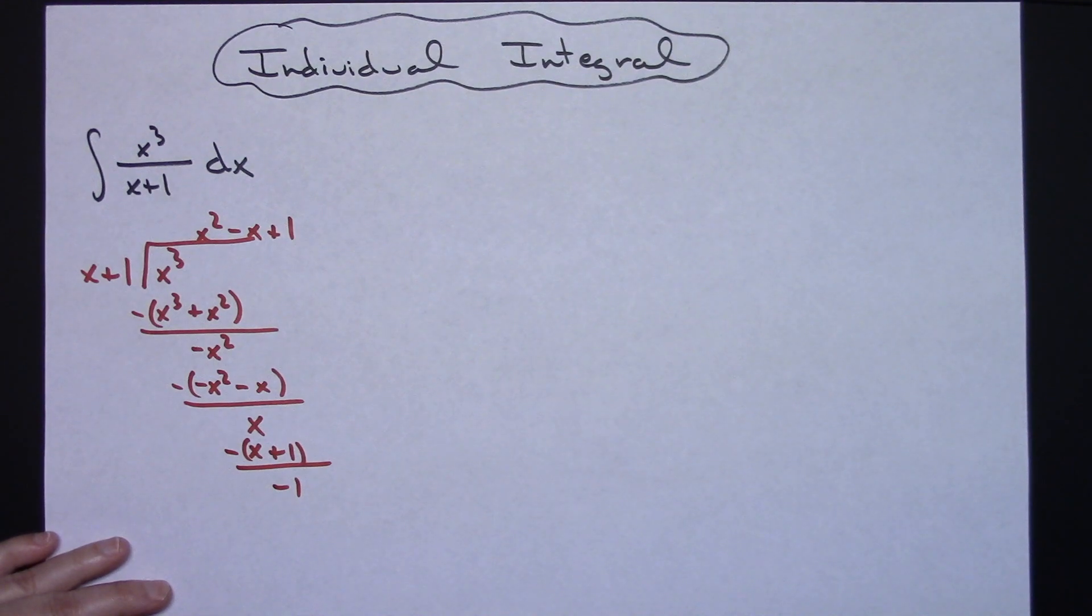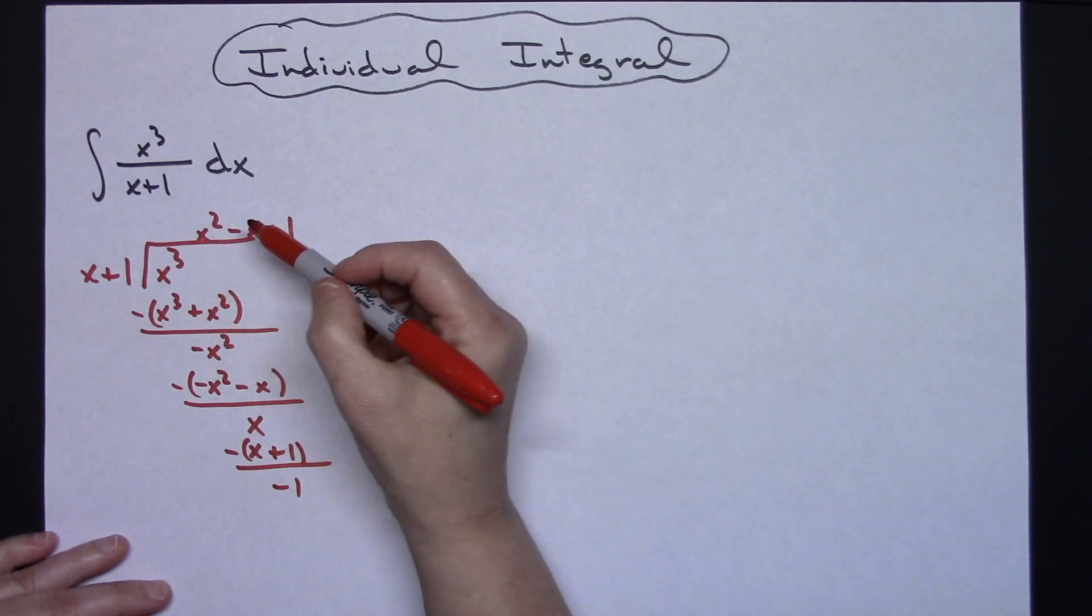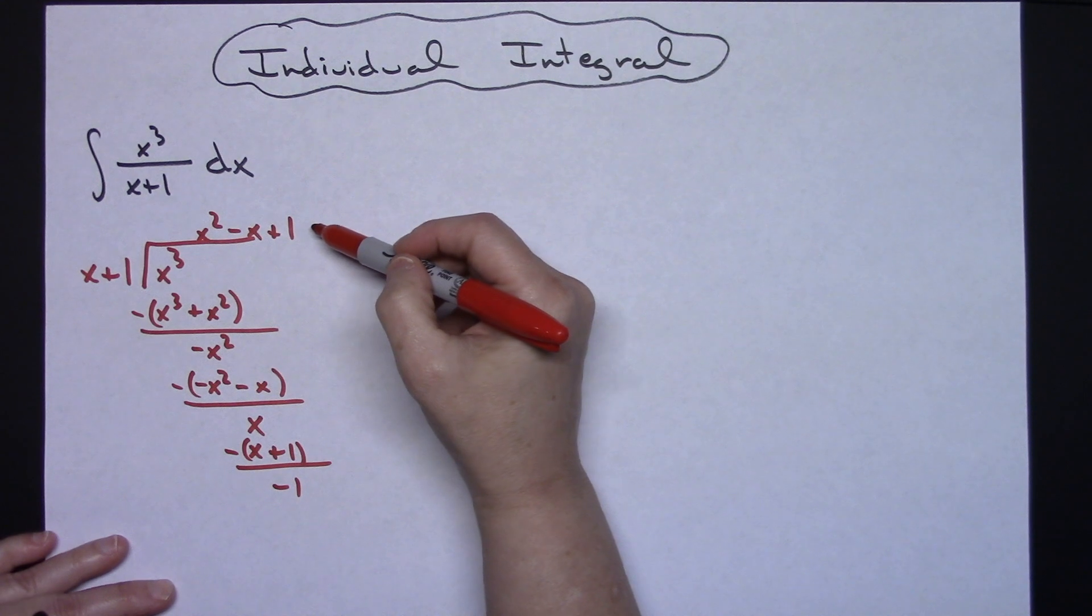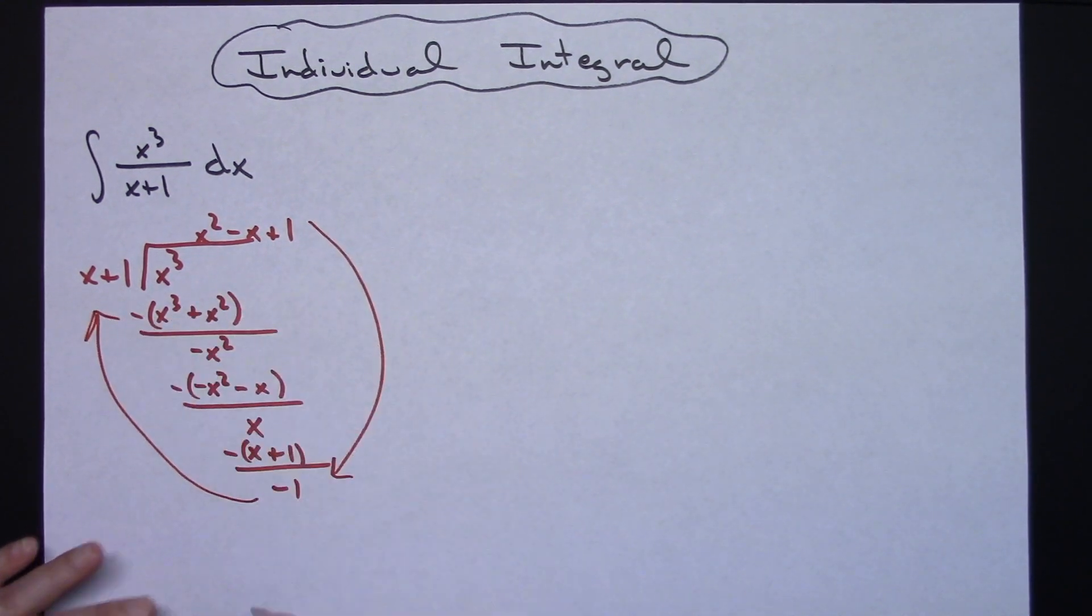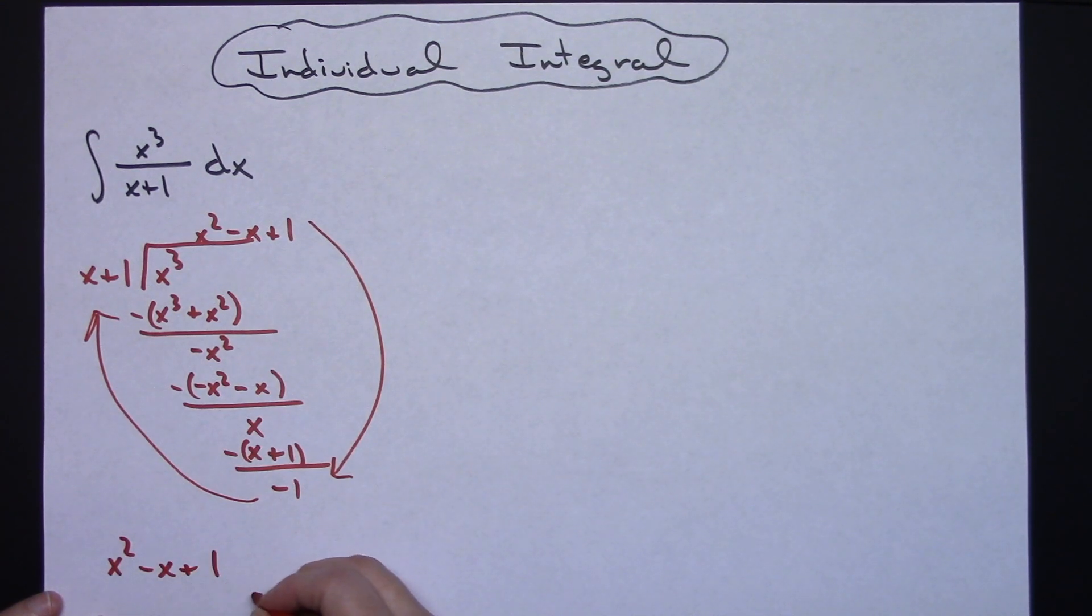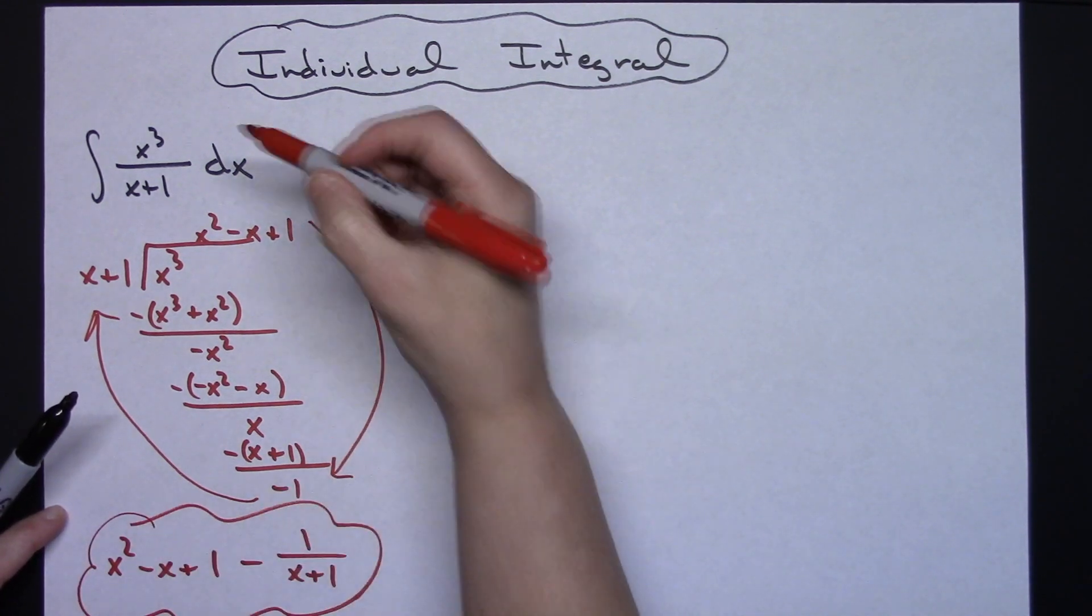Long polynomial division there, but not too bad. That's going to make the integral a whole lot easier. This rational expression is going to be equal to X²-X+1 minus 1/(X+1). This expression is equal to the original rational function.